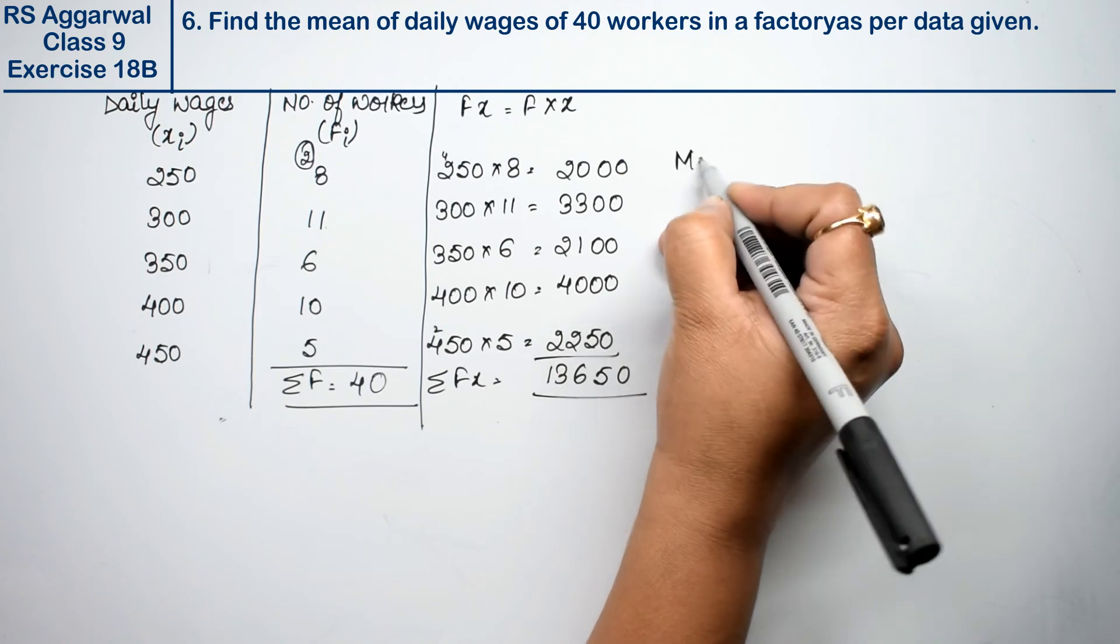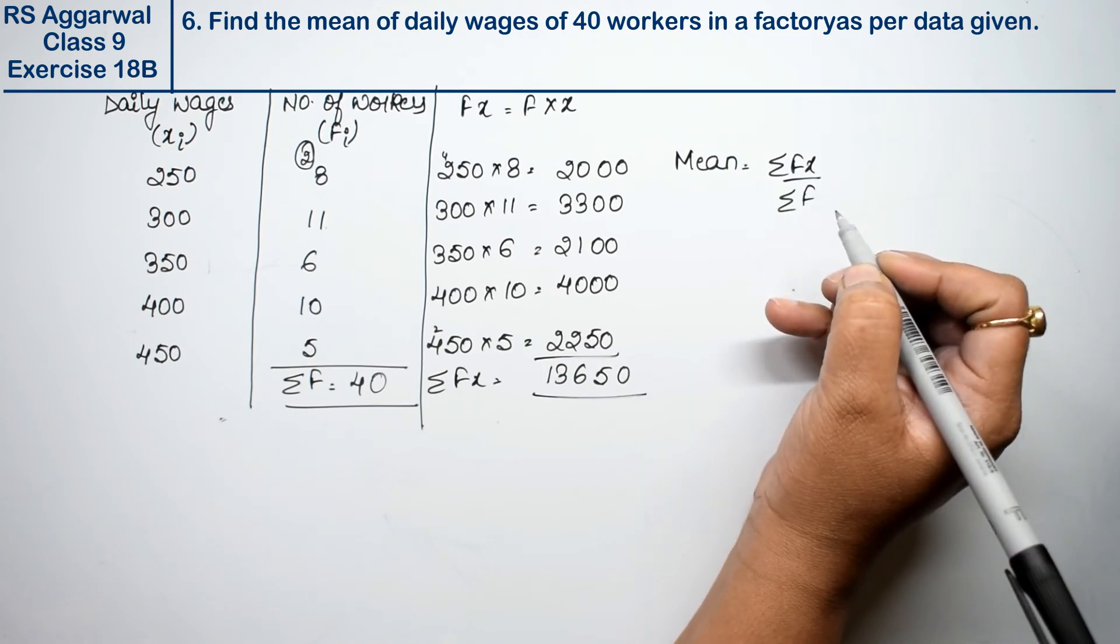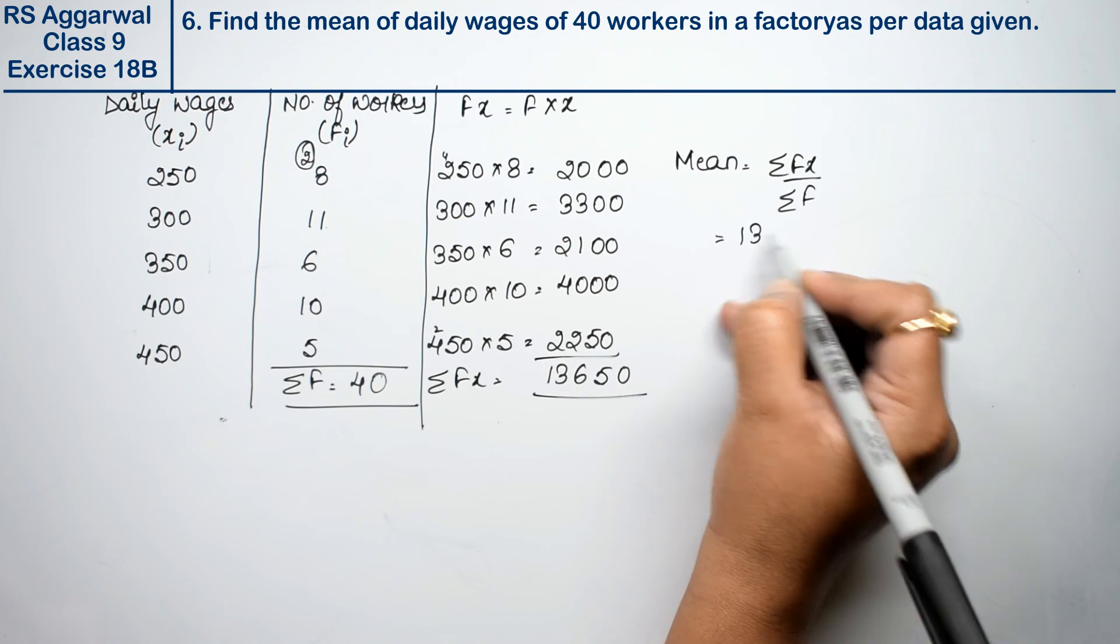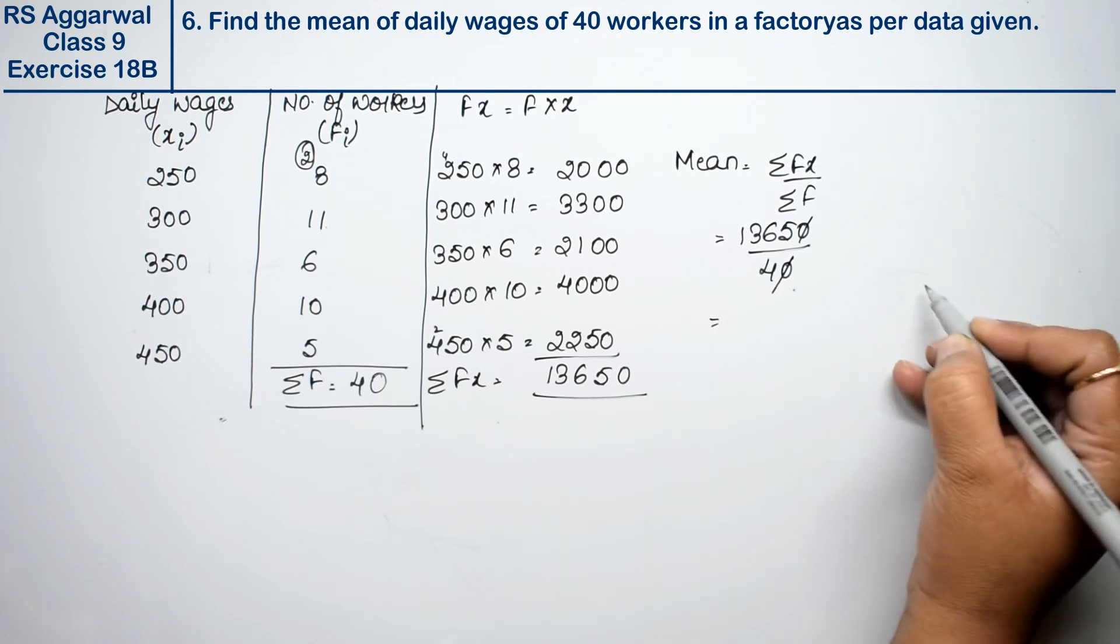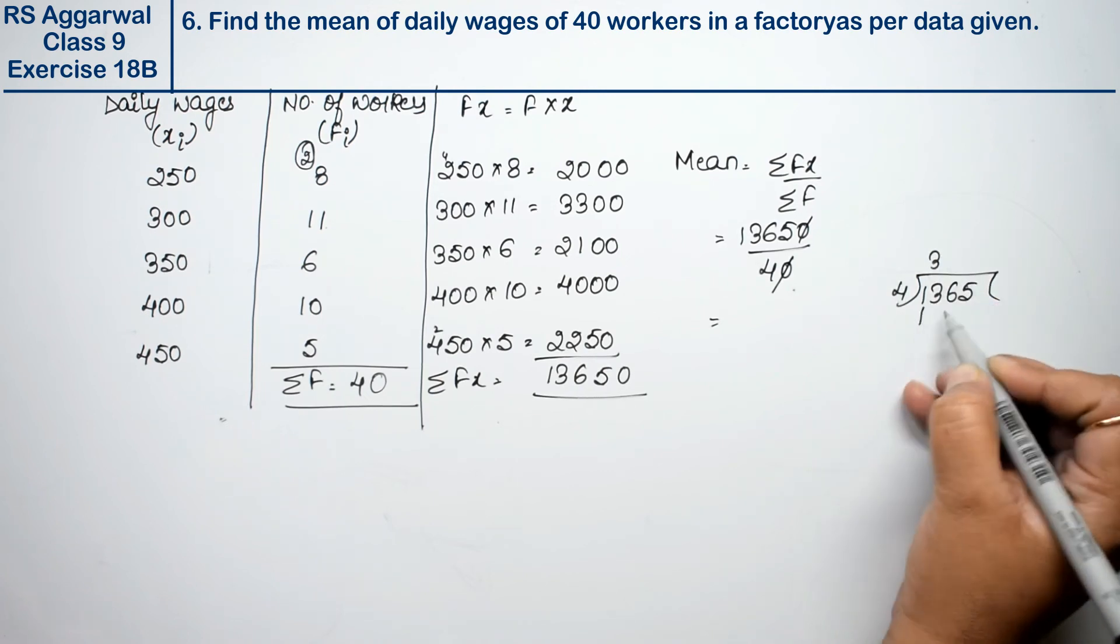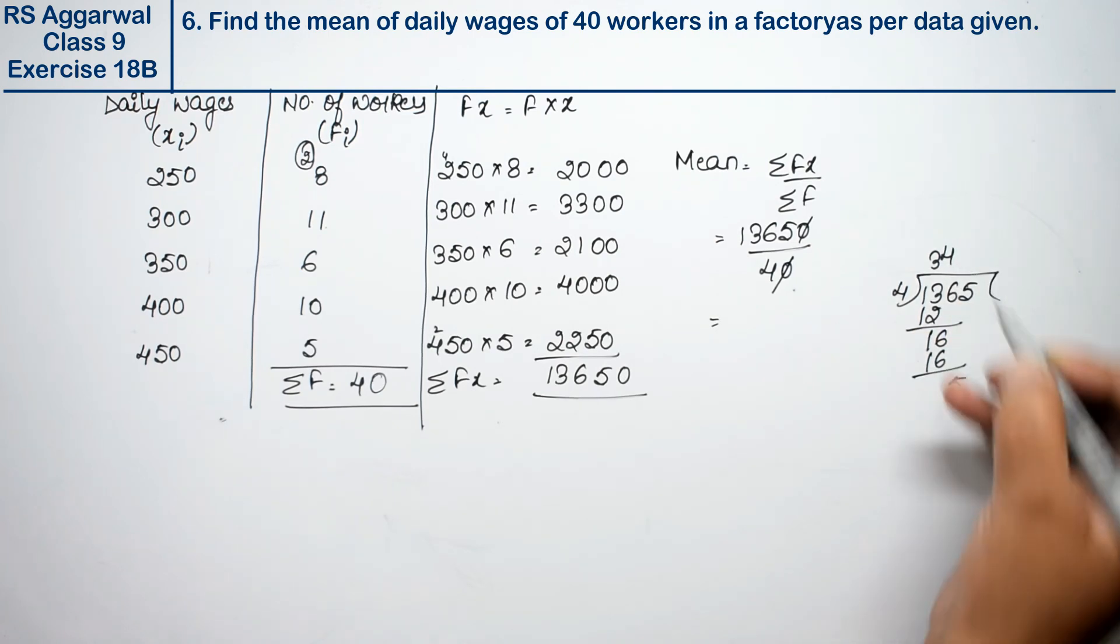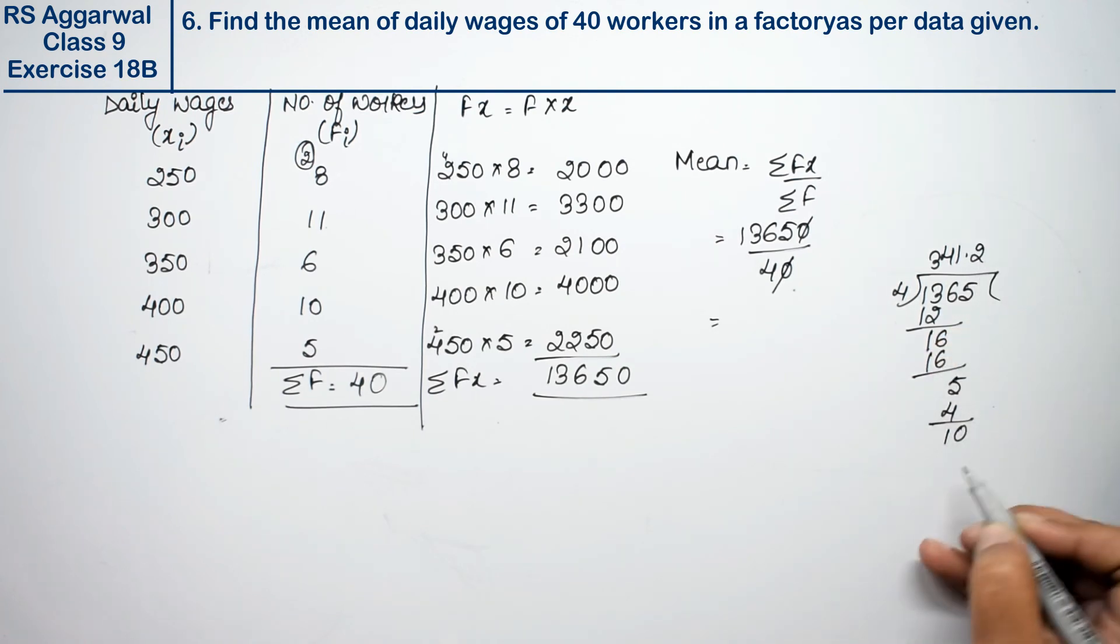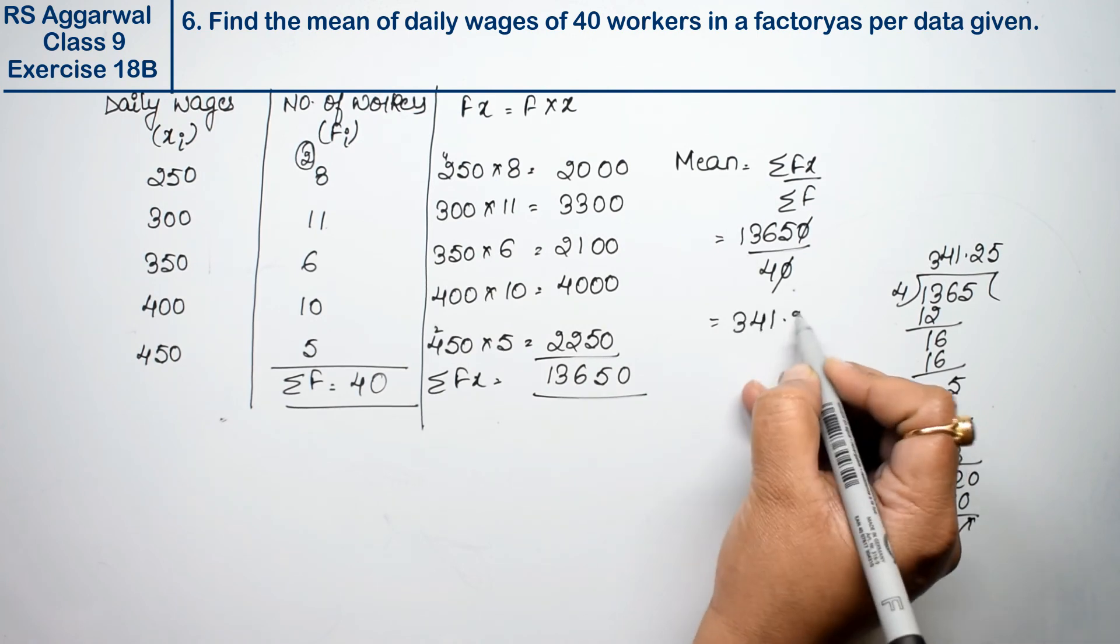Now we will find mean. Mean formula is sigma fx upon sigma f. We will find daily wages, so the answer is rupees. 13650 divided by 40: 0, 0, 1, 3, 6, 5, 4, 3, 12, 16, 4, 4, 16, 5, 4, 1, 1, 0, 4, 2, 8, 20, 20, 4, 5, 20. Right, friends? So answer is?